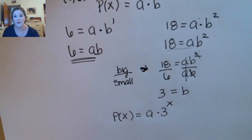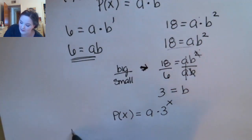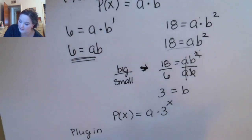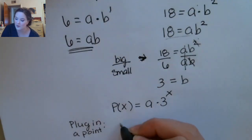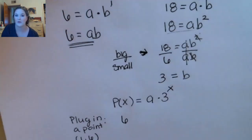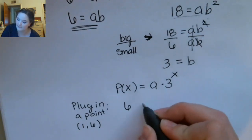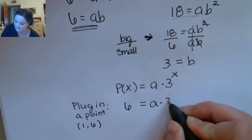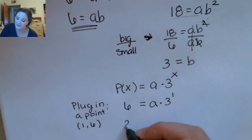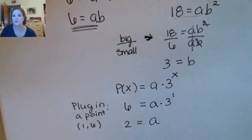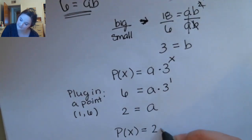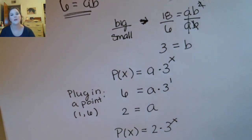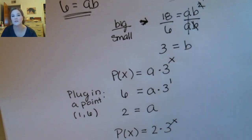Now we can plug either point back in to find a. I'll use the first point, (1, 6). Plugging in x equals 1 and y equals 6, we divide both sides by 3 and get a equals 2. So now we can finish writing our equation. That's what you do when you don't have the initial value — plug in both points and divide the equations.